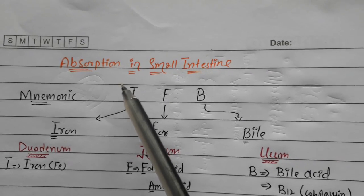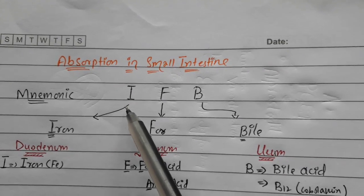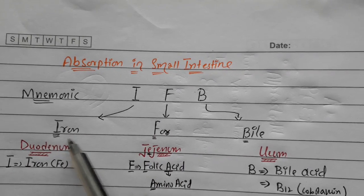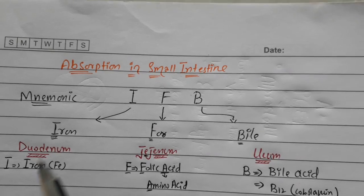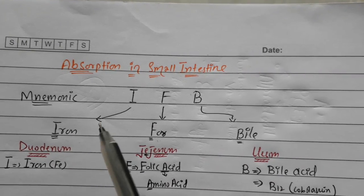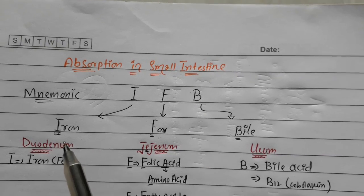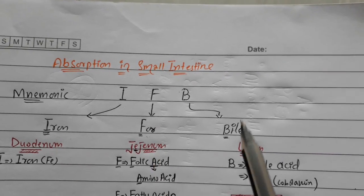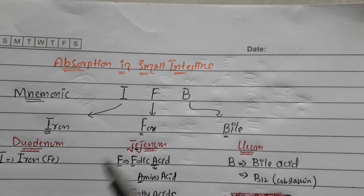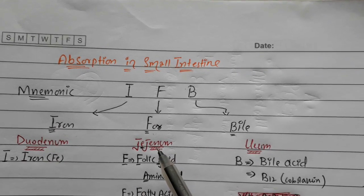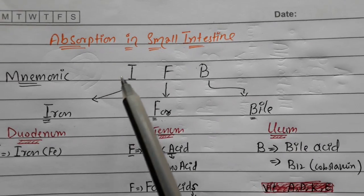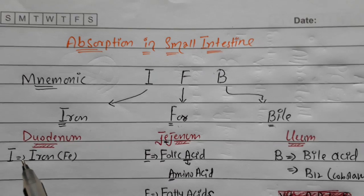For absorption in the small intestine, just remember the mnemonic IFB — Iron, F, B. The first part of the small intestine is the duodenum, the second is the jejunum, and the third is the ileum. From the 'I' in IFB, remember that iron is absorbed in the duodenum.